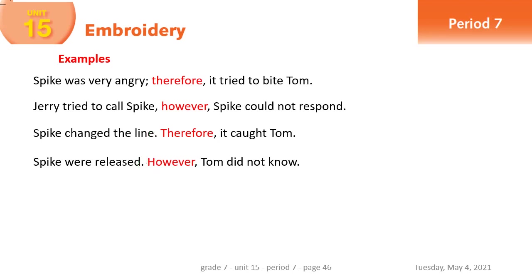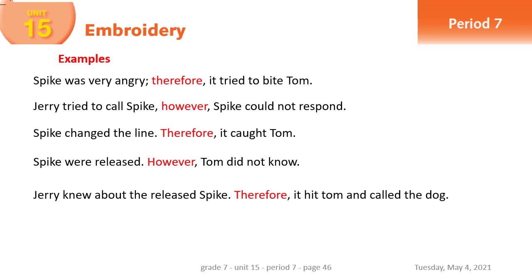The last example: 'Jerry knew about the released Spike; therefore, it hit Tom and called the dog.' The first sentence caused the second — Jerry knew, and as a result took action. We can use 'therefore' in two ways: either a period then 'Therefore' (capital) then a comma, or a semicolon then 'therefore' then a comma.